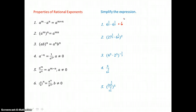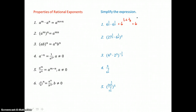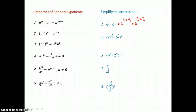So it'll be 6 to the 1 half plus 1 third power. And now to add those fractions, we need a common denominator of 6. So I can write 1 half as 3 sixths, and I can write 1 third as 2 sixths. So altogether, we have 6 to the 5 sixth power.